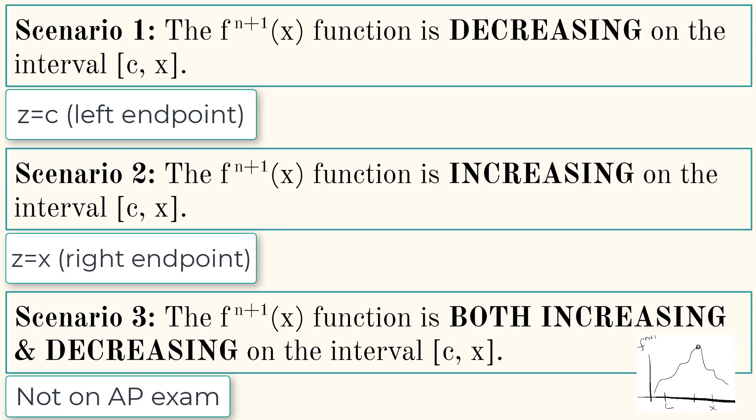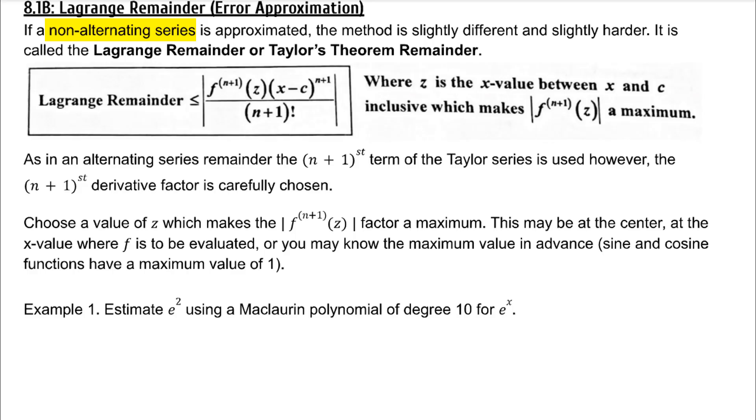Let's do some examples. For example 1, we're going to estimate e squared using a Maclaurin polynomial of degree 10 for e to the x.